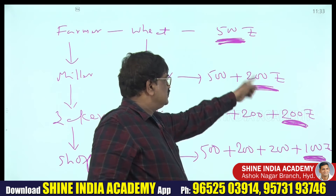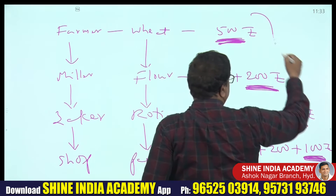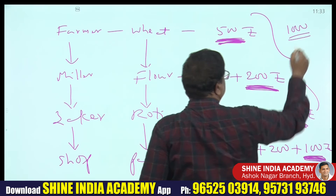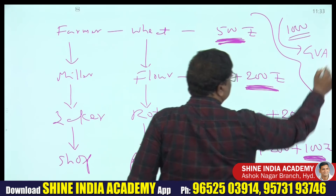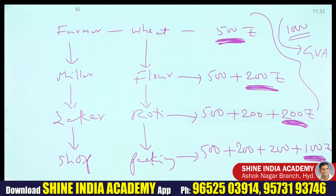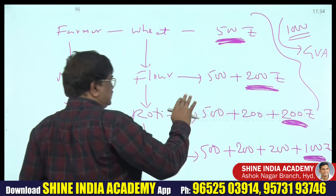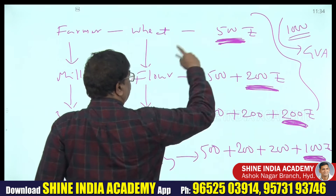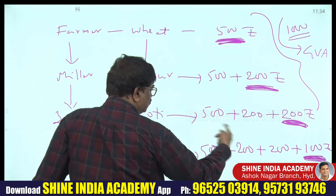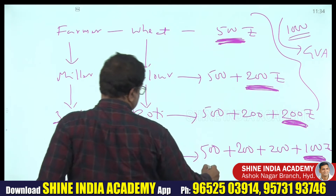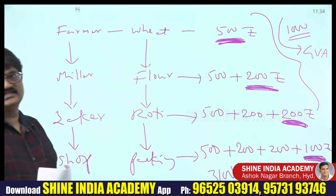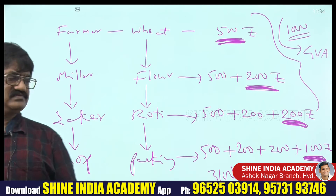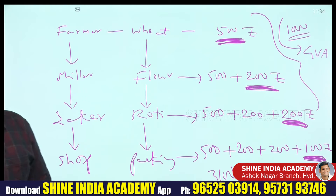Adding the final values: 500 + 200 + 200 + 100 = 1000 rupees. This 1000 rupees is termed GVA — Gross Value Added. In the calculation of national income, NSO considers only final values (GVA = 1000), not the total value if former values are also included (TVA = 3100).